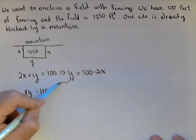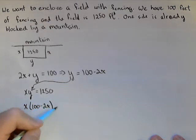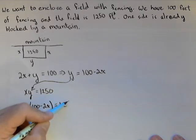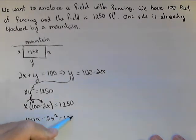And we're going to plug this into this y down here. So, we have x times 100 minus 2x equals 1,250. We're going to go ahead and distribute this x as part of our solving. So, 100x minus 2x squared equals 1,250.